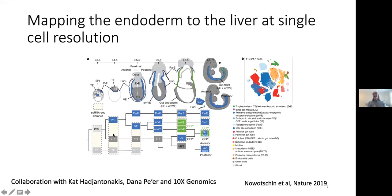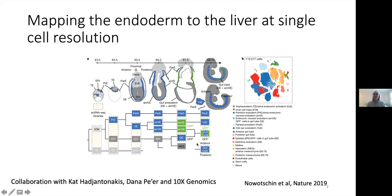At that point, we were able to get involved with a group in New York. Kathy Jantanakis and I approached 10x Genomics to set up this big experiment — to really map endoderm from the very early blastocyst stage all the way through early mouse embryogenesis and through to the early stages of organogenesis. Kathy was interested in the early stages and we were interested in the organogenesis stages. Some of the libraries overlap — for example, the definitive endoderm library and some gut tube libraries from eight and a half.